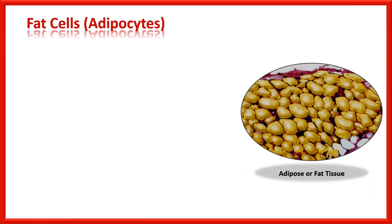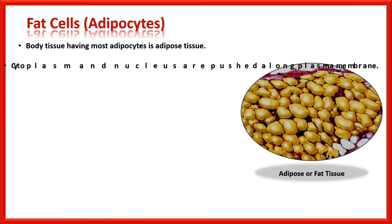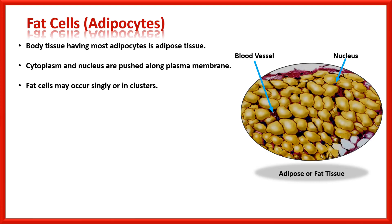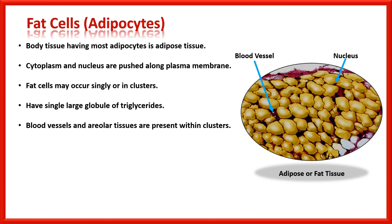Fat cells are biologically called adipocytes. The body tissue having the most adipocytes is termed adipose tissue, as other tissues are also present within it. The cytoplasm and nucleus of these fat cells are pushed along the plasma membrane due to the presence of a single large globule of fat in the center. Fat cells may occur singly or in different clusters in different locations of the body. They have a single large globule of triglycerides. Blood vessels and areolar tissues are also present within these clusters.